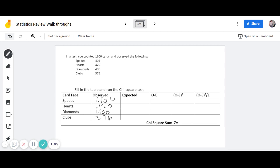Typically, you wouldn't, right? You would expect to see an equal amount. So to figure out our expected, we are going to take 1,600, which is the total number of cards we have, and then divide that by 4,